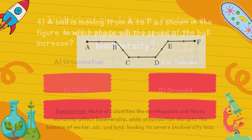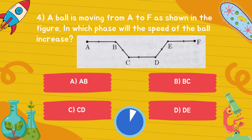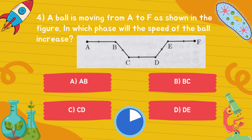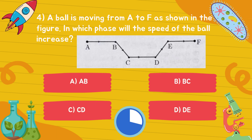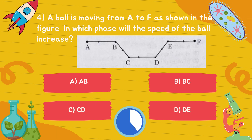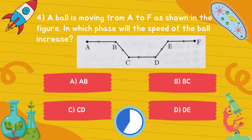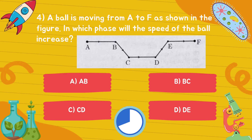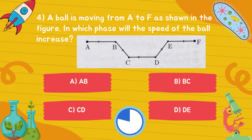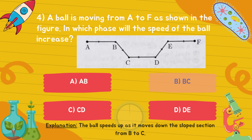A ball is moving from A to F as shown in the figure. In which phase will the speed of the ball increase? Answer is option B, B-C.